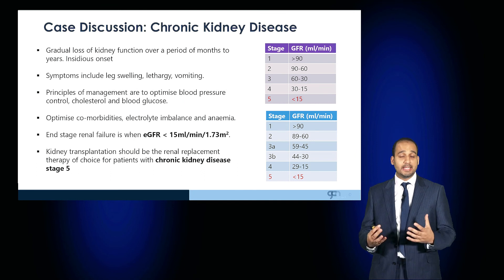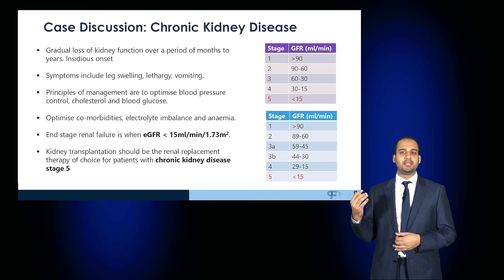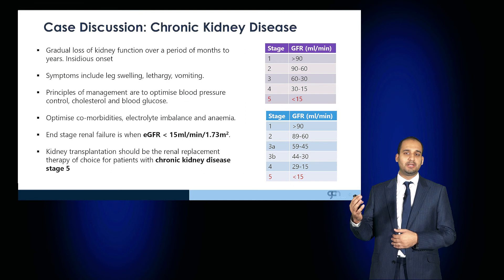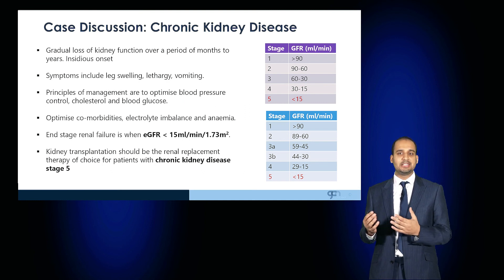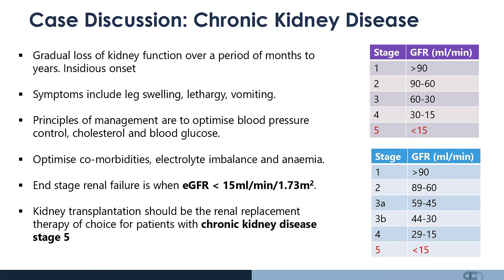You may be asked about the stages of chronic kidney disease. There are five key stages. Stage one is where the estimated GFR is more than 90 mils per minute. In stage two, the GFR drops to between 60 and 90. In stage three, 30 to 60. Stage four, the GFR drops to between 15 and 30. And stage five, which is end-stage renal failure, is where the GFR is less than 15 mils per minute. At this point, the patient should be considered for dialysis as well as transplantation.